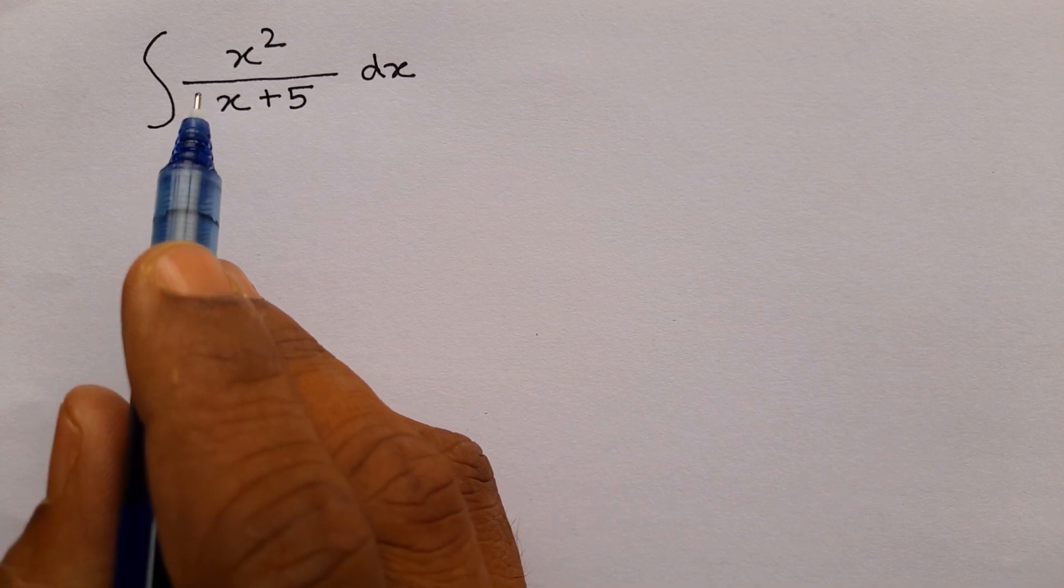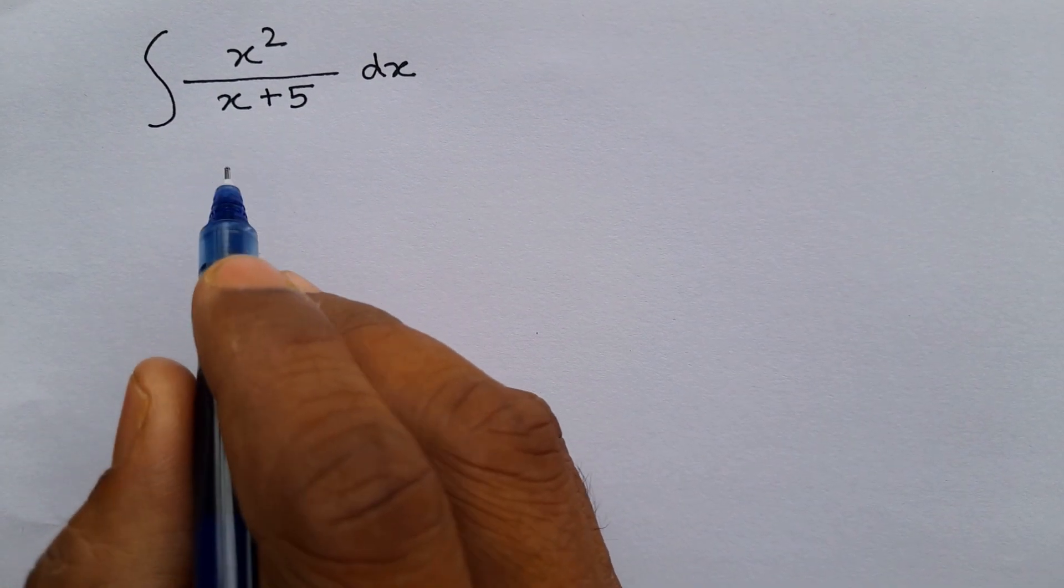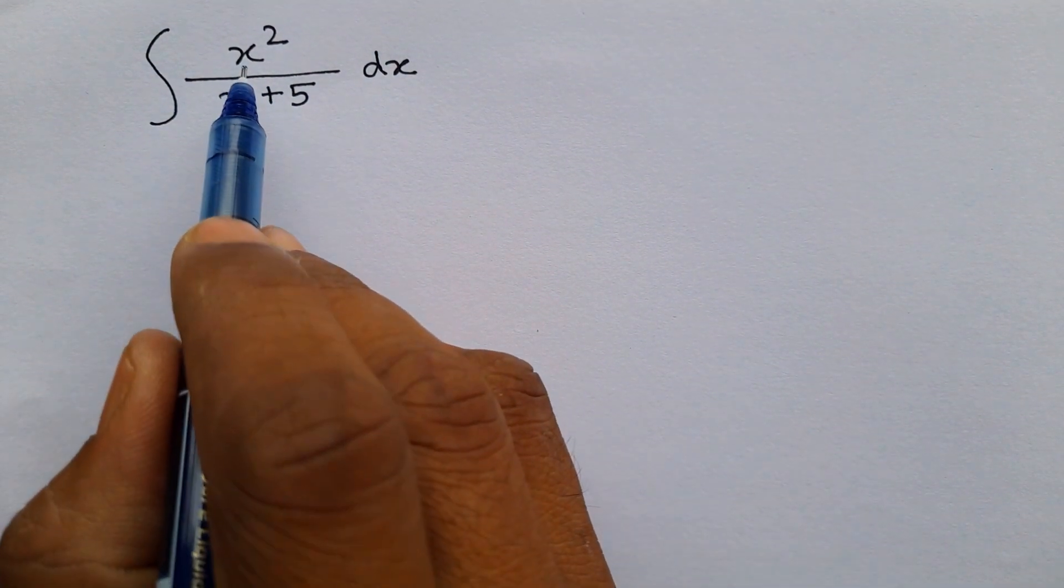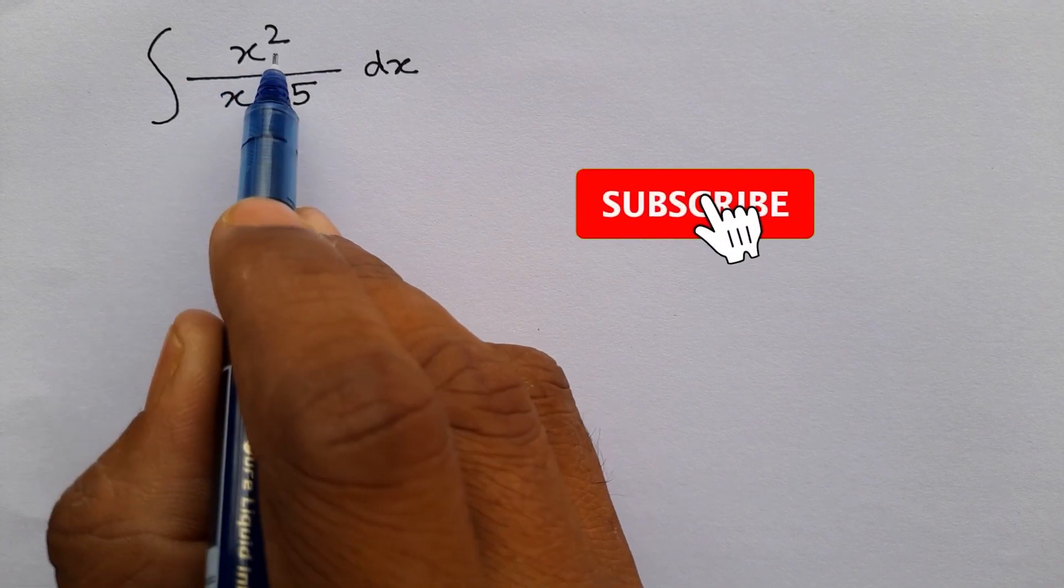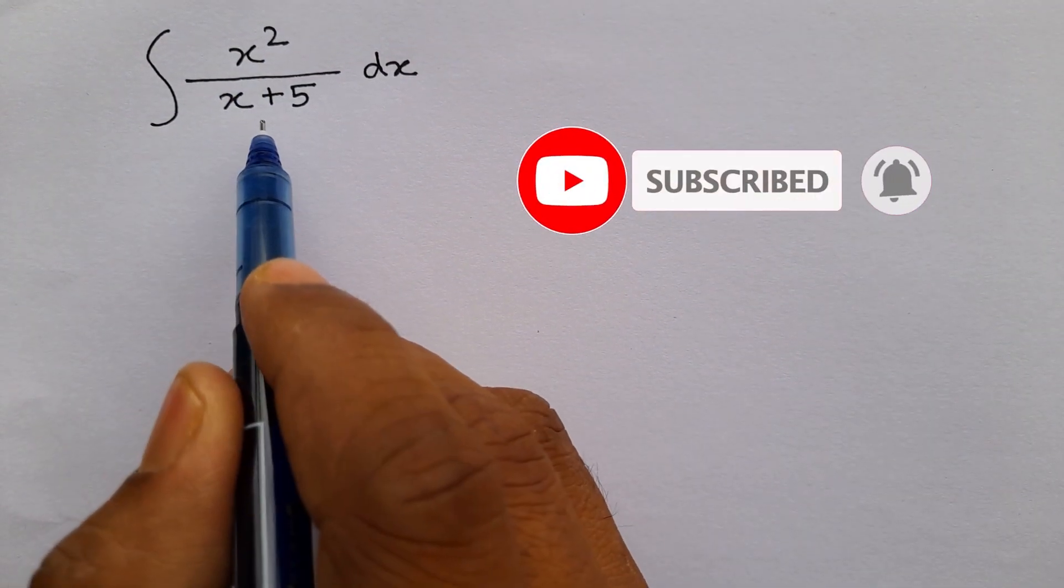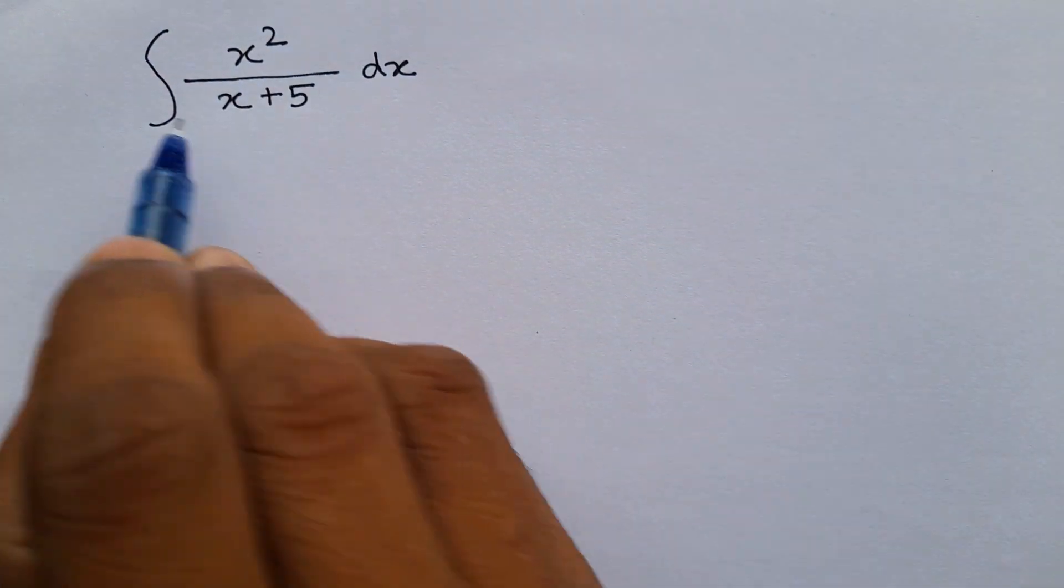To solve this problem we have to first look where we can substitute something. Here the denominator is x plus 5 and the numerator is x squared. We cannot directly divide x squared with x plus 5 and we don't have any formula for this expression.